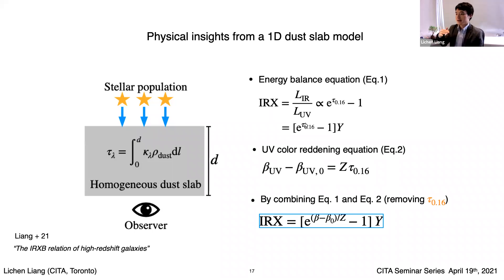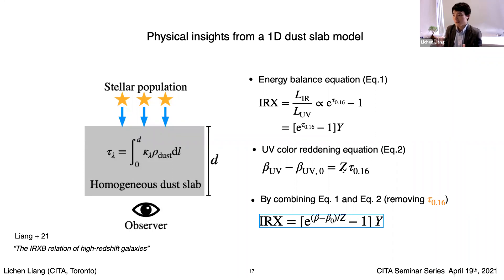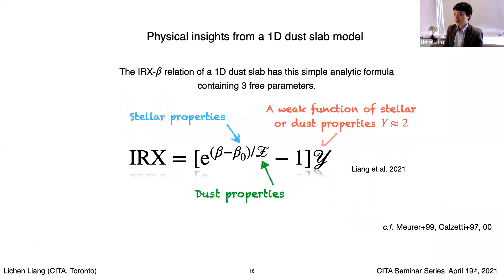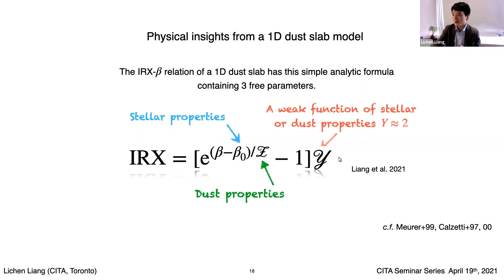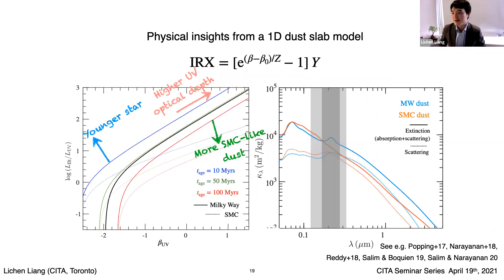The color-reddening equation shows how much the UV slope beta is bent by the attenuation, following a linear relationship between beta and tau. The quantity Z is related to the dust properties. Combining equations one and two to eliminate tau, you end up with a simple analytic form. If the galaxy is as simple as a 1D dust slab, this is the relation you get. This analytic formula contains three parameters: beta-naught corresponds to stellar properties, Z corresponds to dust, and Y is a weak function of both stellar and dust properties.